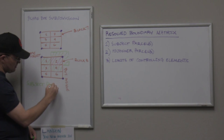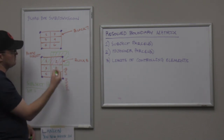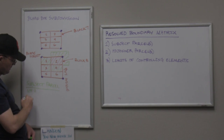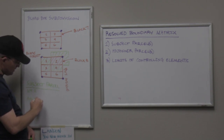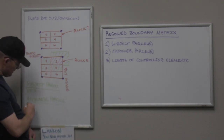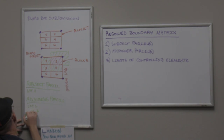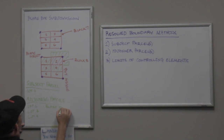I encourage you to list out the layered elements of each layer of the matrix. What goes in the subject parcel layer? In this case: Lot 2 of Block 8. You might have more than one subject parcel, but here we're just doing Lot 2. Then your adjoining parcels layer: Lot 1, Lot 3, Lot 4, a portion of Blake Street, and a portion of Boy Avenue.